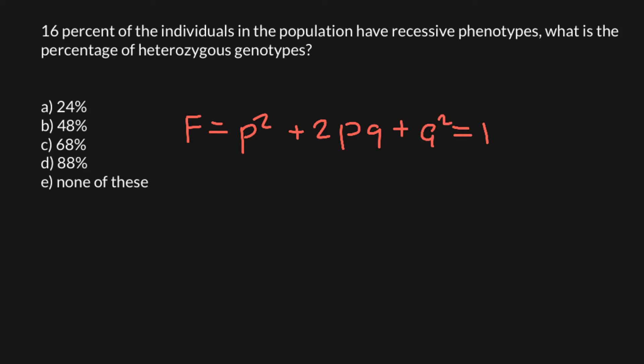The three genotypes arise from two alleles in the population — allele p and allele q — which together represent 100%. You need to remember that 1 in our calculations equals 100%, so we do all calculations on a scale between 0 and 1. To convert any number to a percentage, we just multiply by 100.